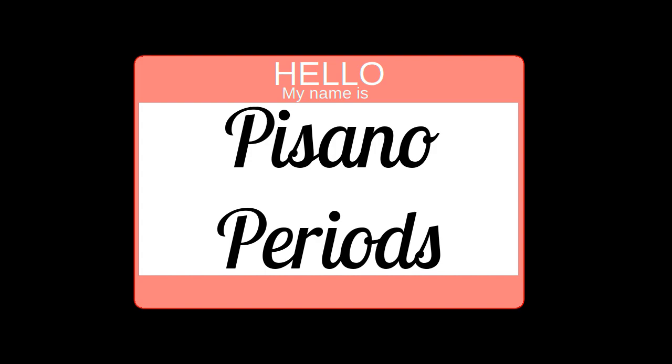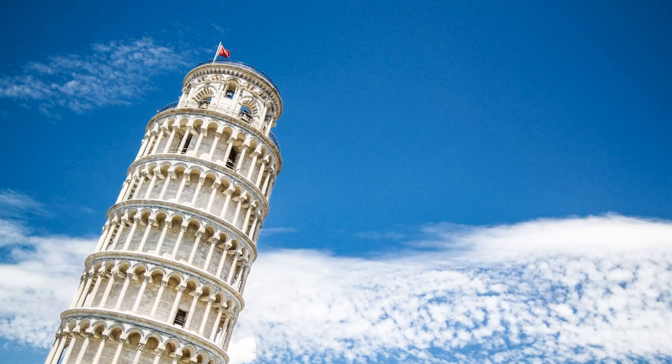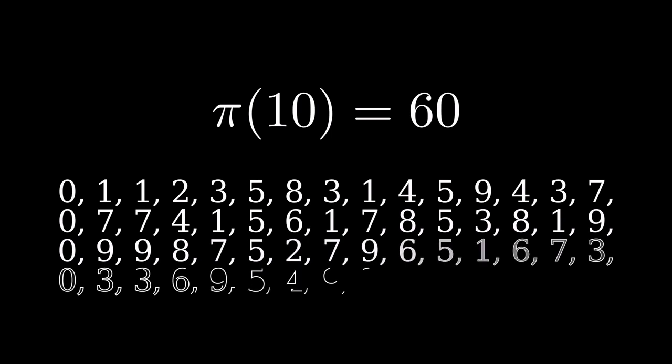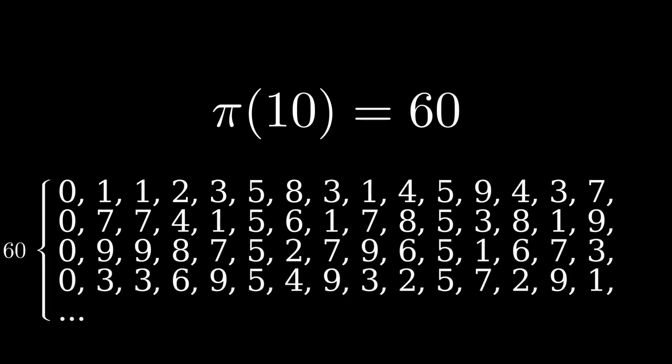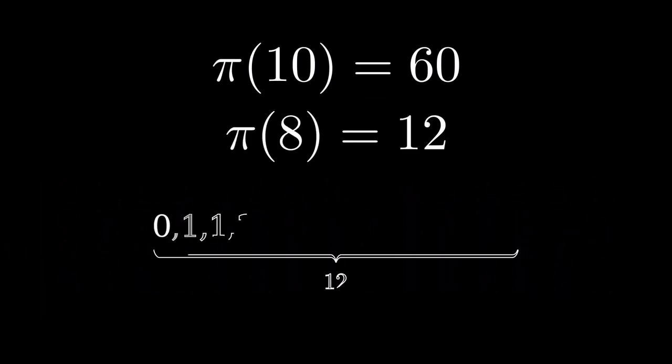Since we're not actually the first people in history to do this, there's already a name for these loop lengths, Pisano periods, named after Fibonacci's hometown of Pisa. They're usually written with the Greek letter pi, just because it makes a puh sound and not anything to do with the circle constant pi. So the Pisano period of 10, or pi of 10, is 60, because the Fibonacci loop mod 10 has length 60. Similarly, pi of 8 is 12.